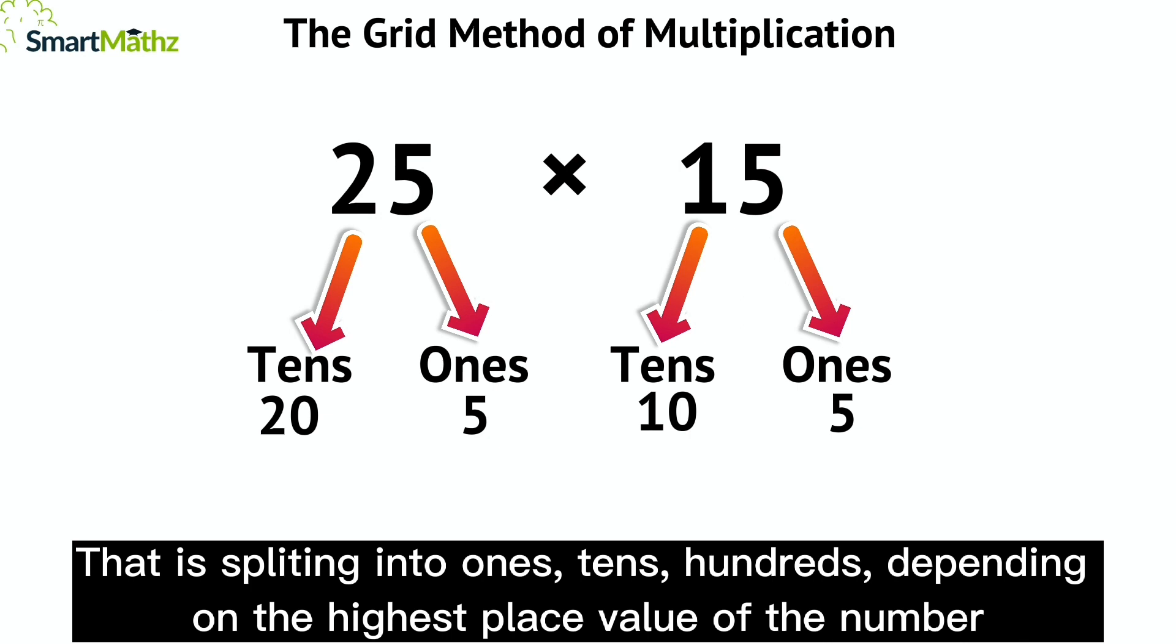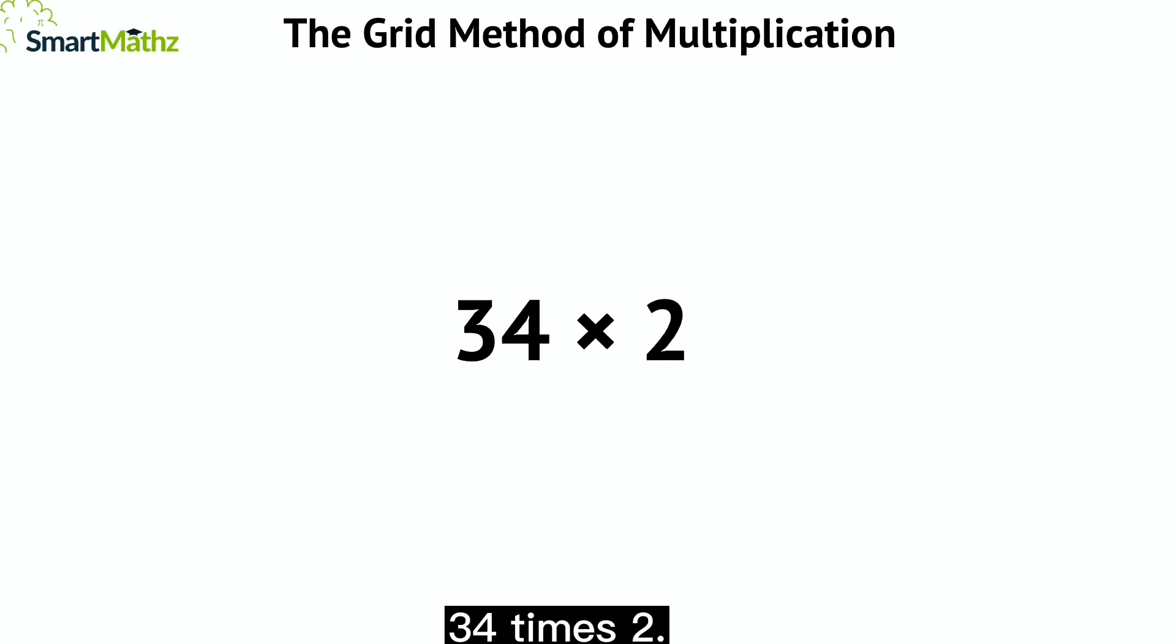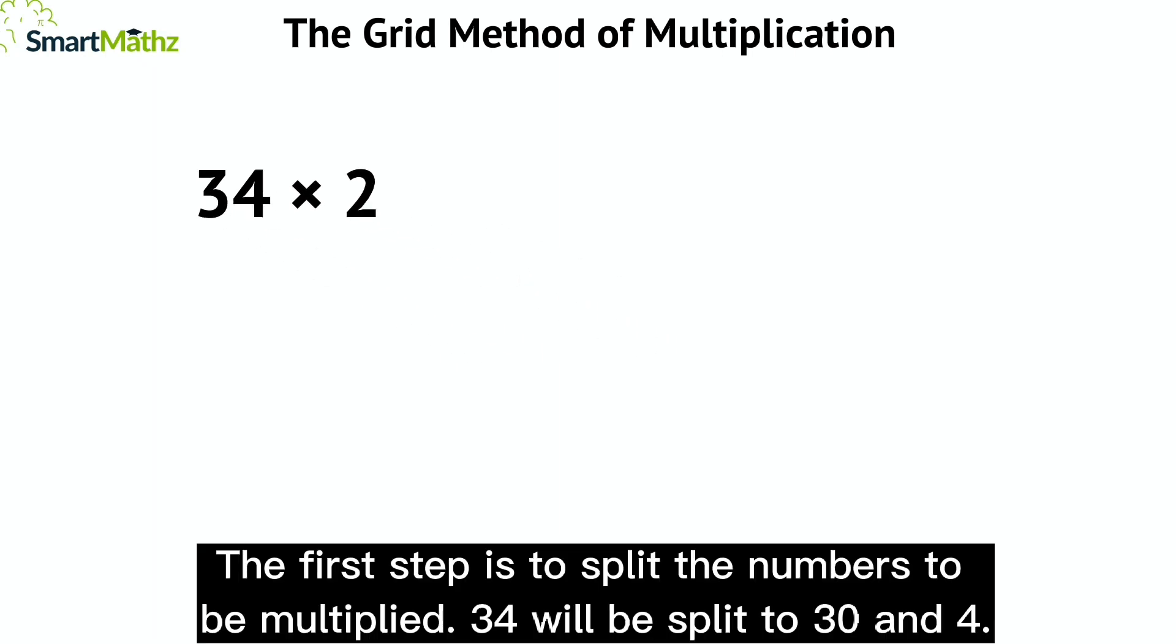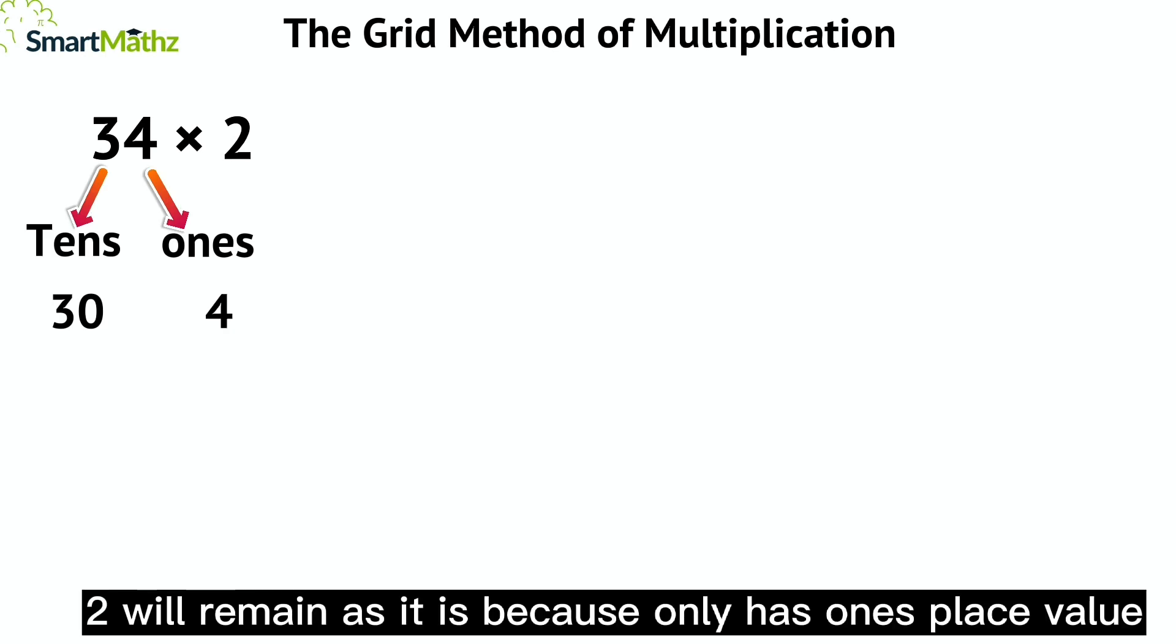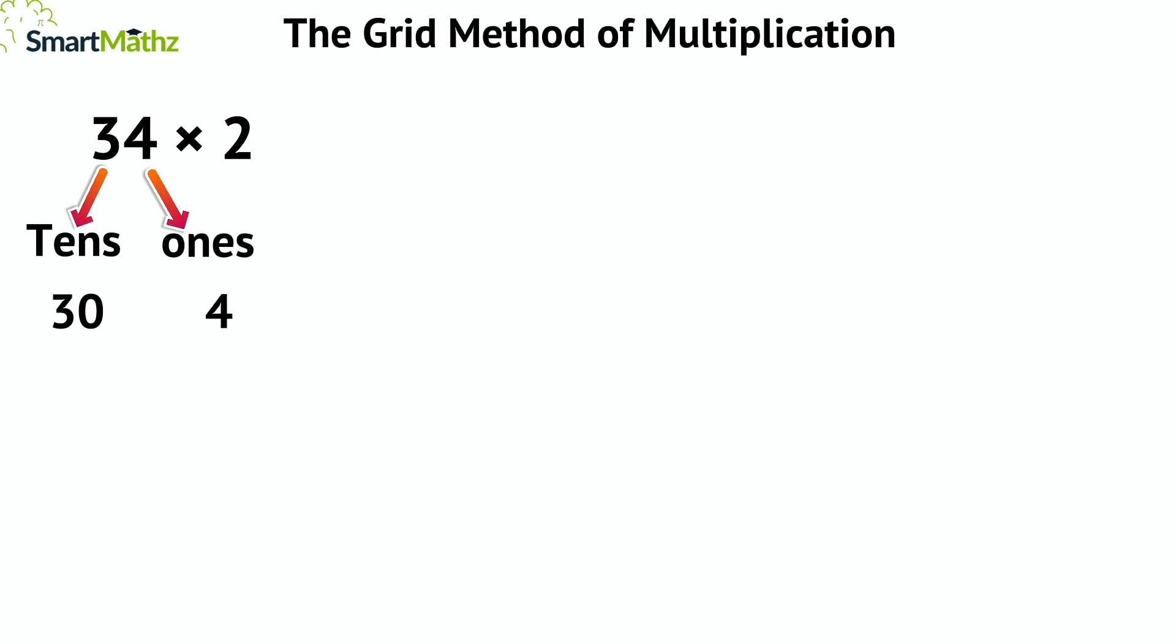Let's try this: 34 times 2. The first step is to split the numbers to be multiplied. 34 will be split to 30 and 4. 2 will remain as it is because it only has one's place value.